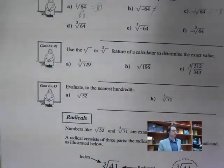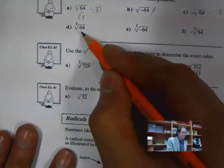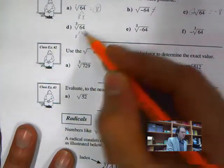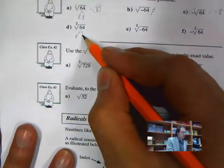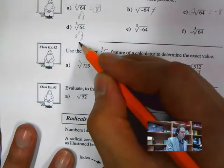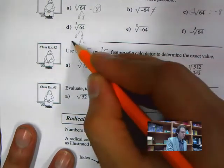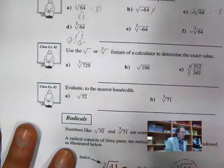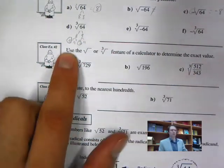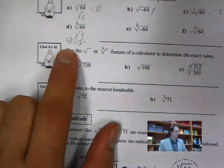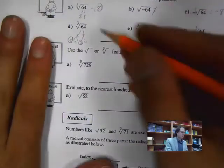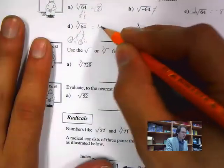Now we look at the cube root of 64, so we need triplets. We can go 8 and 8, then break it down: 8 is 2 times 4, and the other 8 is 2 times 4. Those two 2s make another 4, giving us four 4s — so the cube root of 64 is 4.